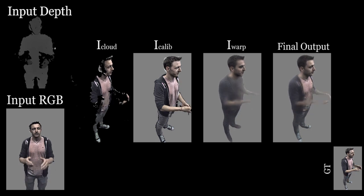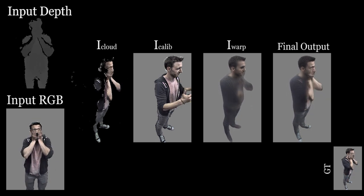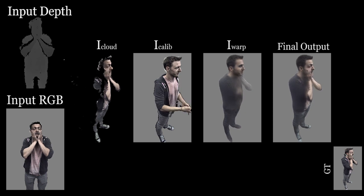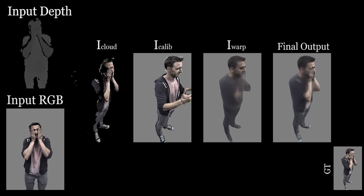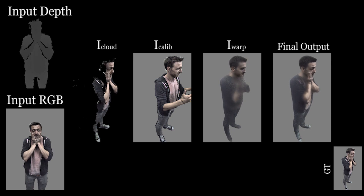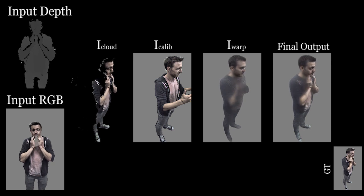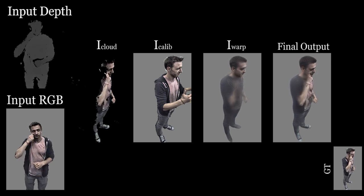Notice how the output of each stage contributes to the final predicted image. Observable parts are taken from the re-rendered point cloud, whereas missing parts are in-painted with the warp calibration image.